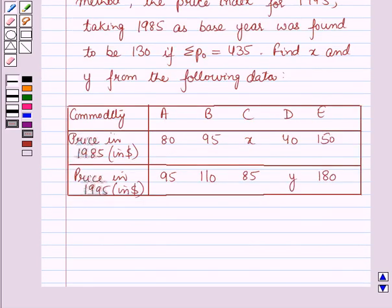The commodities are given as A, B, C, D and E. The corresponding prices in the year 1985 in dollars are given as 80, 95, X, 40 and 150. The corresponding prices of the given commodities in the year 1995 in dollars are given as 95, 110, 85, Y and 180.